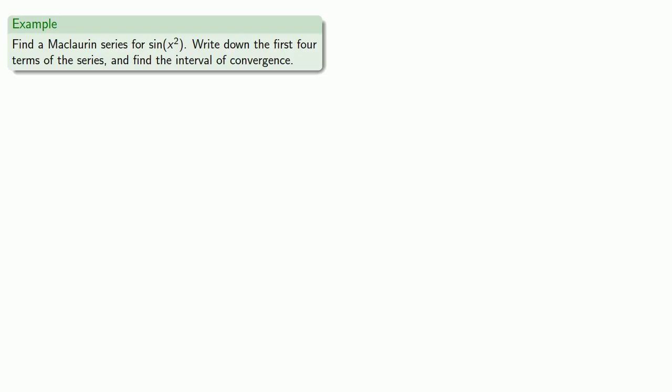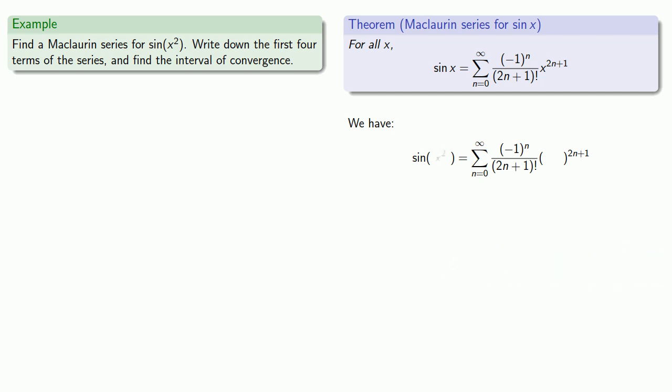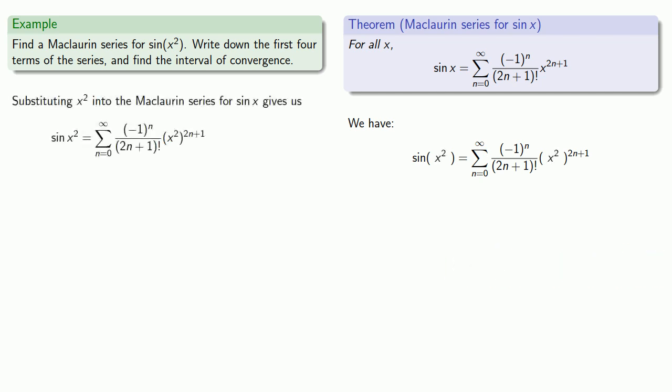So let's use this to find a Maclaurin series for sine of x squared. We'll write down the first four terms of the series and find the interval of convergence. We could do this by taking repeated derivatives, but we already know the Maclaurin series for sine of x, so let's make use of it. The Maclaurin series for sine of something is the sum from 0 to infinity of (−1)^n over (2n+1)! times that something to the power 2n+1. We'd like this series for sine of x squared, so we'll substitute and obtain our series for sine of x squared.